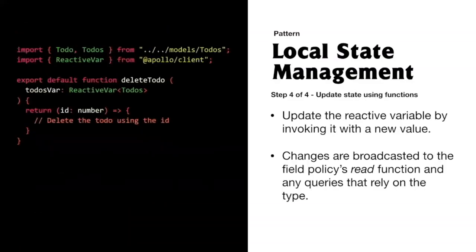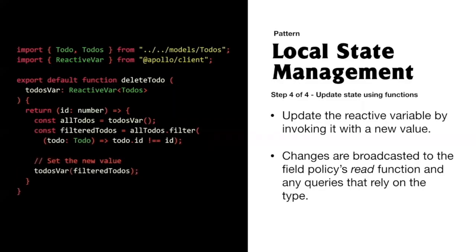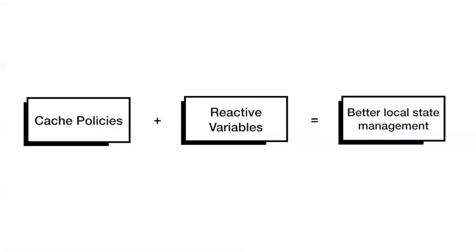To update local state — instead of using mutations — we have a lot more say over how we update state with local variables. We could use simple functions. In this example, a deleteTodos function, when composed with the todosVar reactive variable, gives us a function that enables us to delete a to-do from local state using the ID. We invoke todosVar to get all to-dos, filter by ID to create a new list without the deleted one, then save the todosVar reactive variable and trigger a re-render by passing the new list in as an argument.